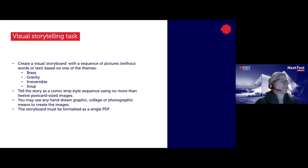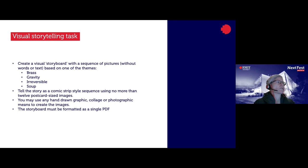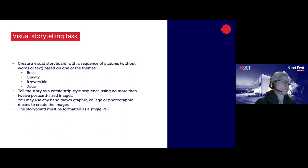The visual storytelling task: create a visual storyboard with a sequence of pictures without words or text, based on one of the given themes. Tell the story as a comic strip style sequence using no more than 12 postcard-size images. You may use hand-drawn, graphic, collage, or photographic means to create the images. The storyboard must be formatted as a single PDF.